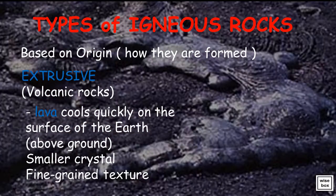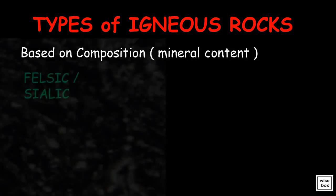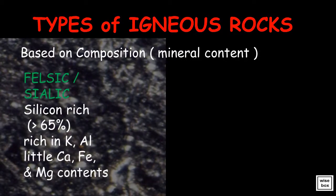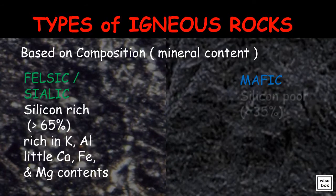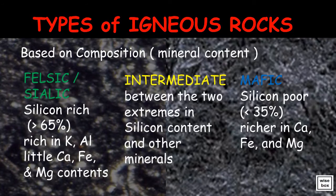In extrusive rocks, the minerals do not have a long time to grow large. Rather, as many minerals are crystallizing at the same time, they grow in any spare space around them. Igneous rocks may also be classified based on their composition or mineral content. Felsic, or sialic rocks, are silicon-rich; they are also rich in potassium and aluminum, and have little calcium, iron, and magnesium content. There are also rocks intermediate between the two extremes in silicon content and other minerals.